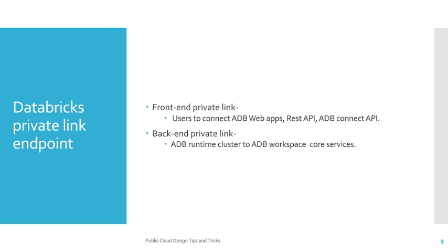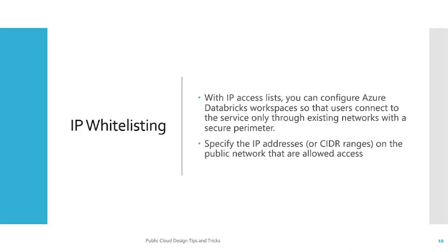Next, Databricks private link endpoints. There are two types of private link endpoints supported by Databricks: one is the front-end private link and the second is the back-end private link. The front-end private link is used by users to connect to Azure Databricks web apps, REST API, or ADB Connect API. The back-end private link is for the Azure Databricks runtime cluster to connect to Azure Databricks workspace core services, providing secure connectivity from your cluster to workspace core services.